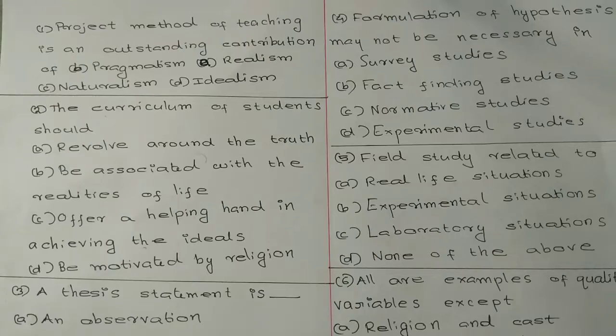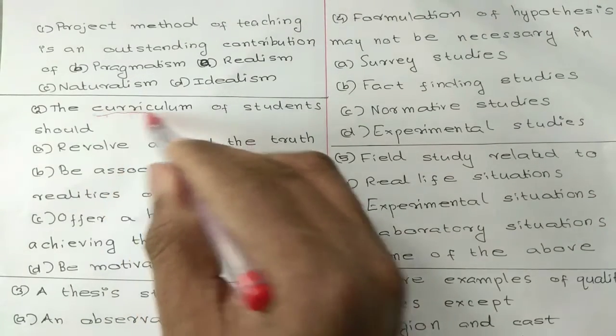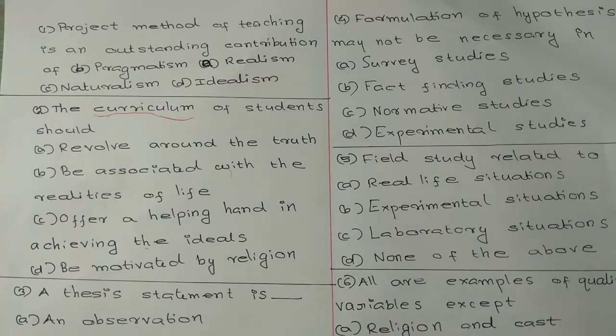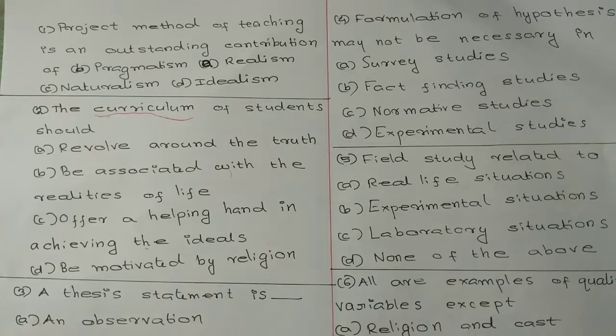Question 2: The curriculum of students should. Option A: Revolve around the truth. Option B: Be associated with the realities of life. Option C: Offer a helping hand in achieving the ideals. Option D: Be motivated by religion.